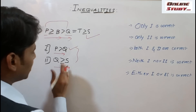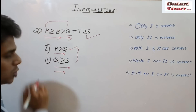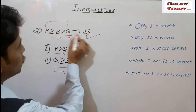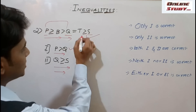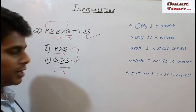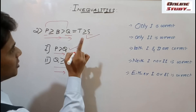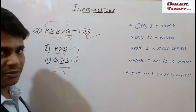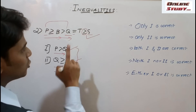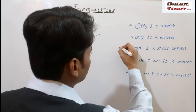Now the second conclusion: Q is greater than or equal to S — we travel from Q to S. Q is here and S is here. From Q to T, yes it is possible. From T to S, yes it is possible, because both symbols are present. As per the rule, we can travel through equal to when at least once a greater than or equal to symbol is given — and that condition is satisfied here. So this conclusion is also true. We mark both conclusion 1 and 2 as correct.